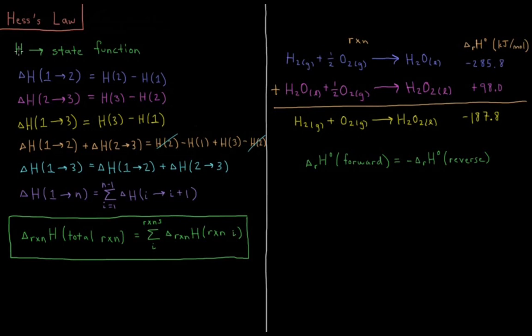For example, if we have a process which occurs through two sequences, we have delta H from 1 to 2. So state 1 to state 2 is enthalpy of state 2 minus enthalpy of state 1. Delta H being a state function just depends on those initial and final conditions. Going from 2 to 3, that is the enthalpy of 3 minus the enthalpy of state 2.